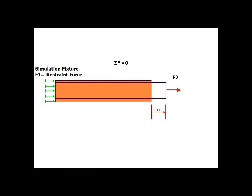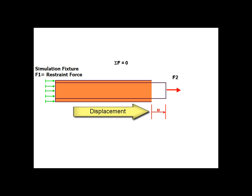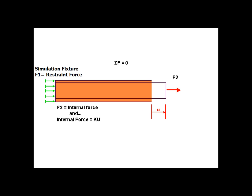In FEA, structures can stretch and compress. We can restrain the left end with an external force value of F1, and on the right end observe the displacement commonly expressed with the letter U. You can think of the bar as a spring and surmise that the force on the right end must identically be the displacement times a spring constant, commonly expressed with the letter K. We write that the internal force F2 is identically equal to K times U.